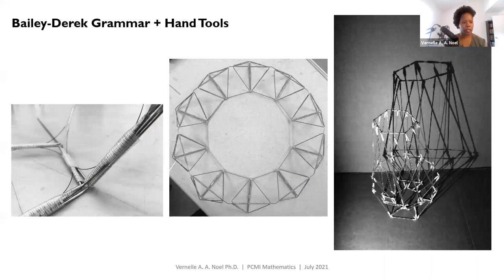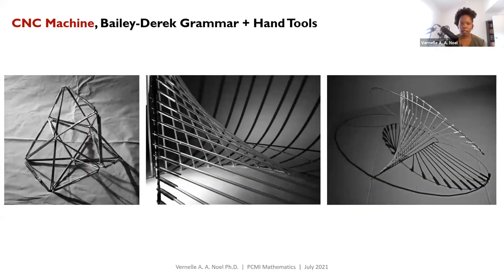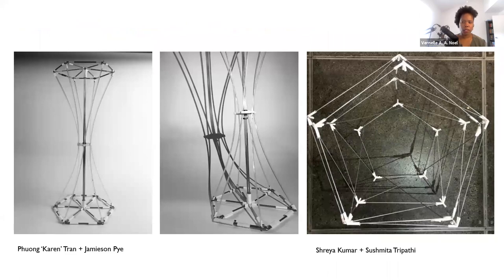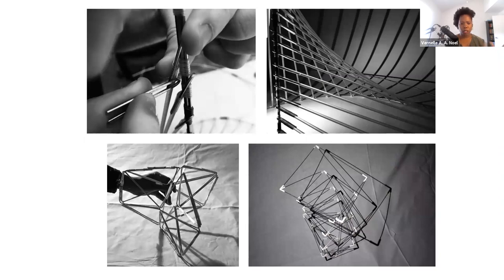I developed three ways of crafting: the Bailey-Derrick Grammar way, a CNC wire bender with digital design software, and digital crafting with software I developed plus 3D printing. These are images from a class I taught at Georgia Tech — student artifacts made using the Bailey-Derrick Grammar and hand tools, using CNC machine with the grammar, and using speculative software for design and fabrication. Through this project, it was important to demonstrate that students could learn computation, mathematical thinking, computational thinking, and designing with shapes through this craft of wirebending — and vice versa.